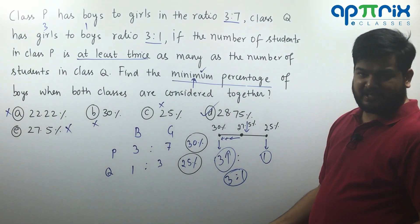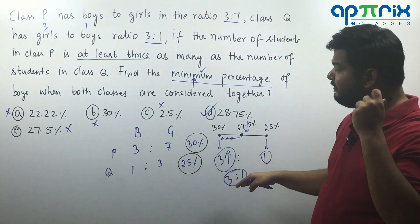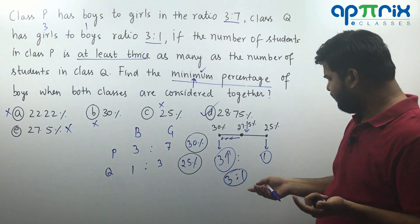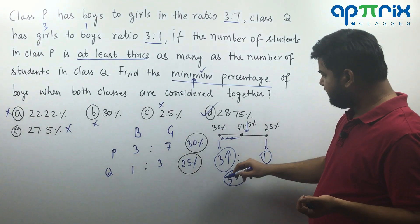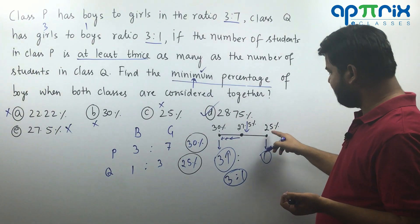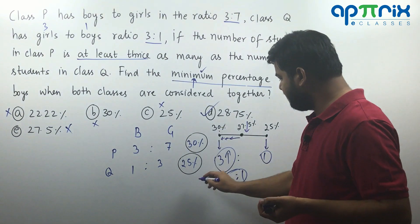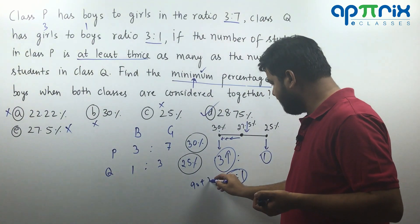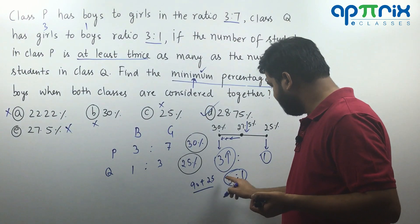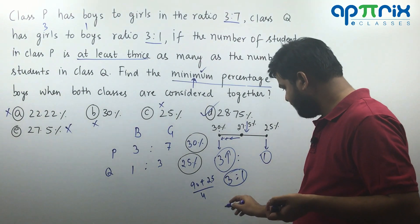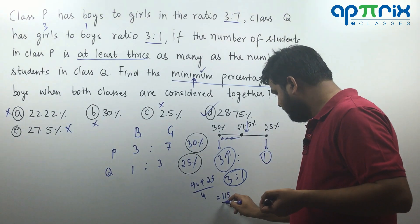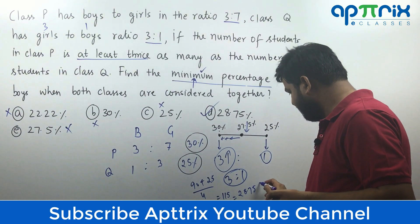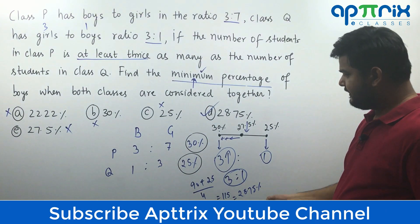Using the ratio 3:1 with 30% for class P and 25% for class Q, the weighted average is: (3 × 30 + 1 × 25) ÷ (3 + 1) = (90 + 25) ÷ 4 = 115 ÷ 4 = 28.75%. That is the answer.